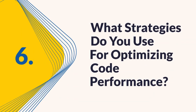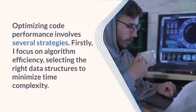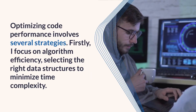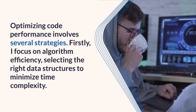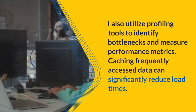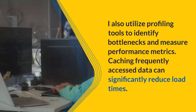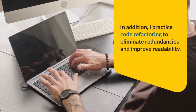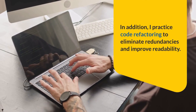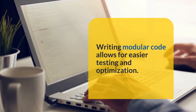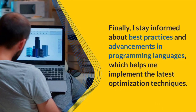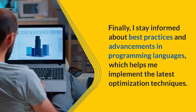Question 6: What strategies do you use for optimizing code performance? Optimizing code performance involves several strategies. I focus on algorithm efficiency, selecting the right data structures to minimize time complexity. I utilize profiling tools to identify bottlenecks and measure performance metrics. Caching frequently accessed data can significantly reduce load times. I practice code refactoring to eliminate redundancies and improve readability. Writing modular code allows for easier testing and optimization. I also stay informed about best practices and advancements in programming languages to implement the latest optimization techniques.